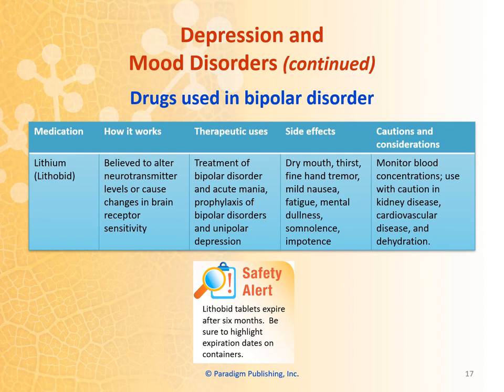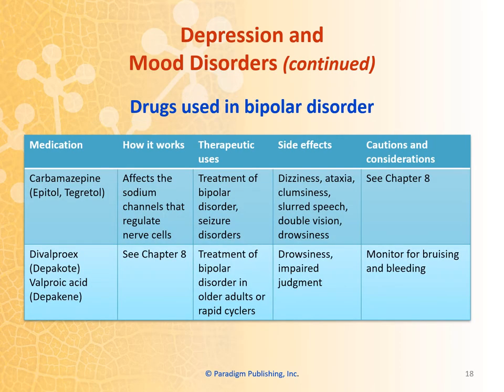Drugs used to treat bipolar disorder include lithium. Lithium is believed to alter neurotransmitter levels or cause changes in brain receptor sensitivity. It's used to treat bipolar disorder, acute mania, prophylaxis of bipolar disorders, and unipolar depression. Other drugs used in bipolar disorder include carbamazepine or Tegretol and divalproex products, also known as Depakote.